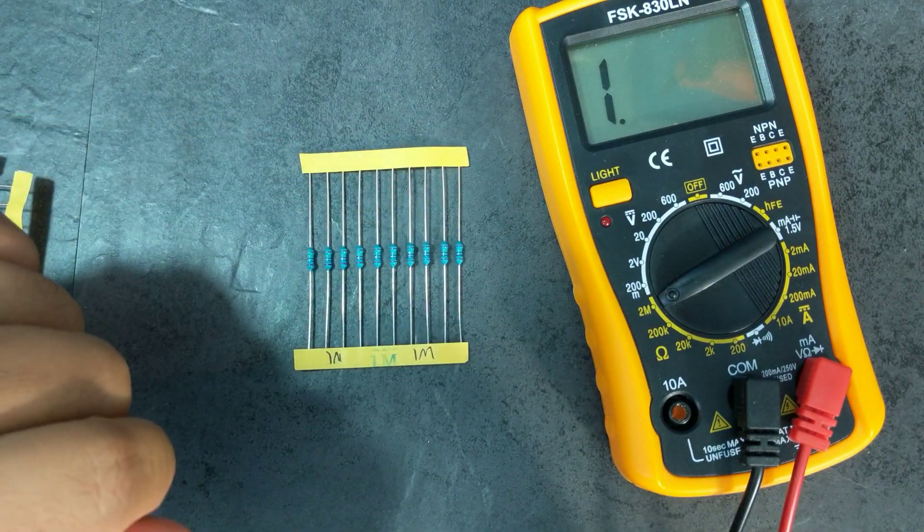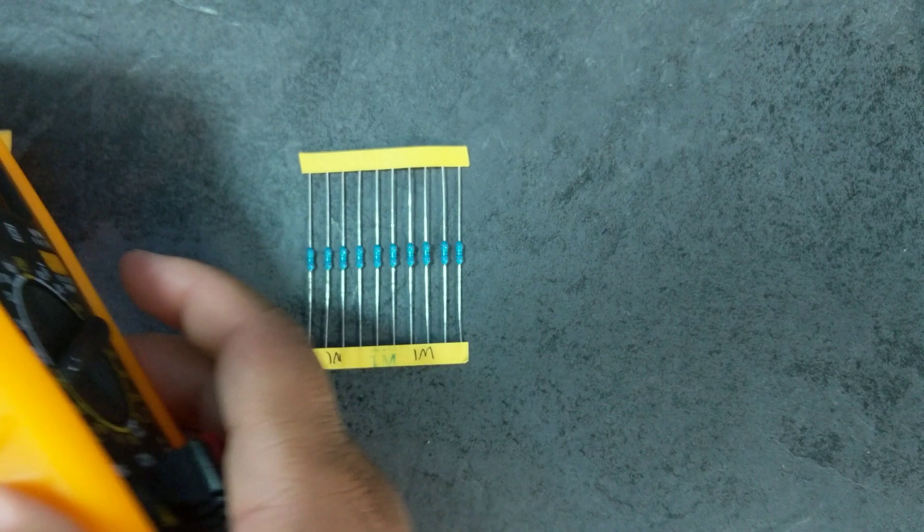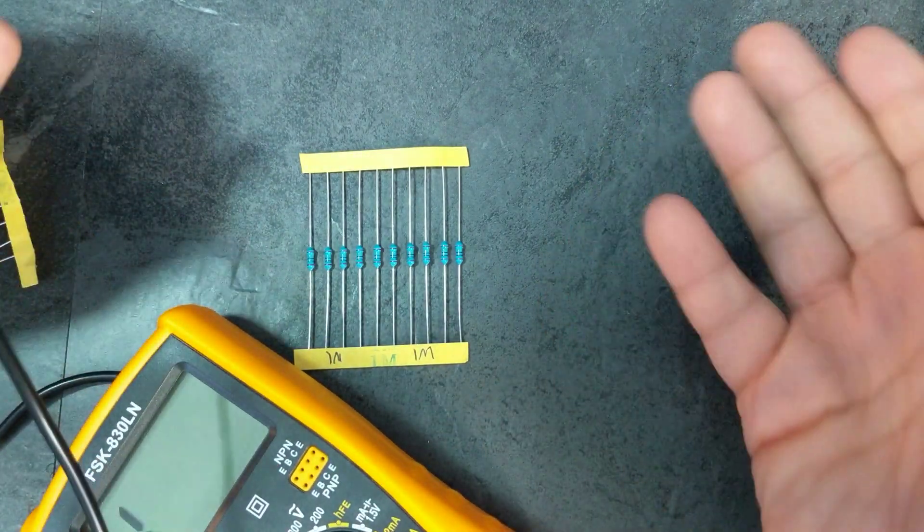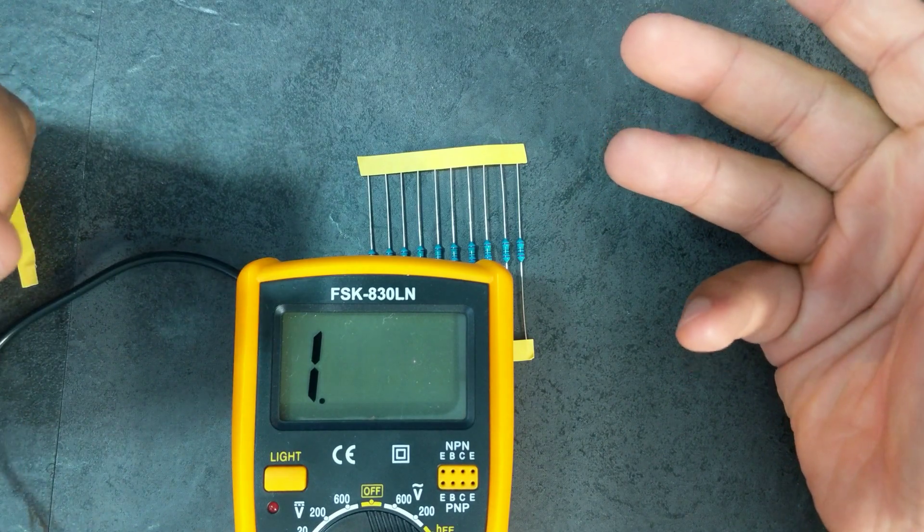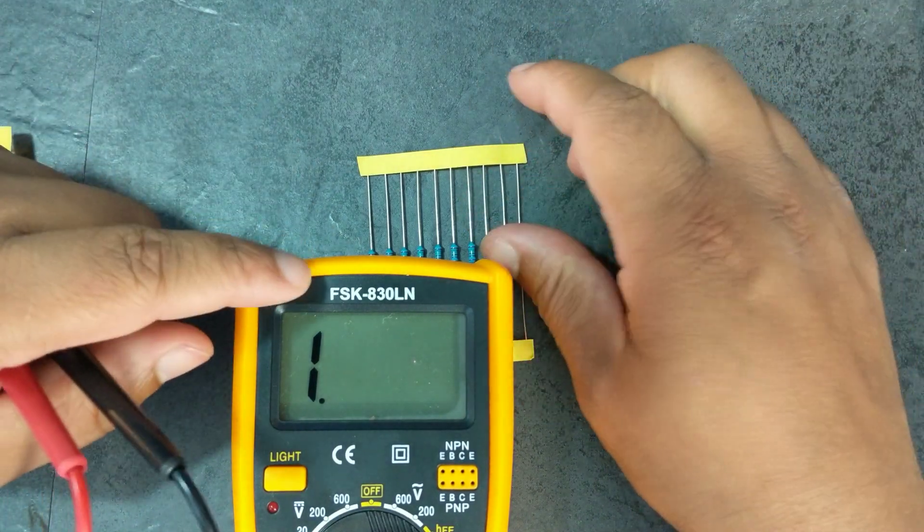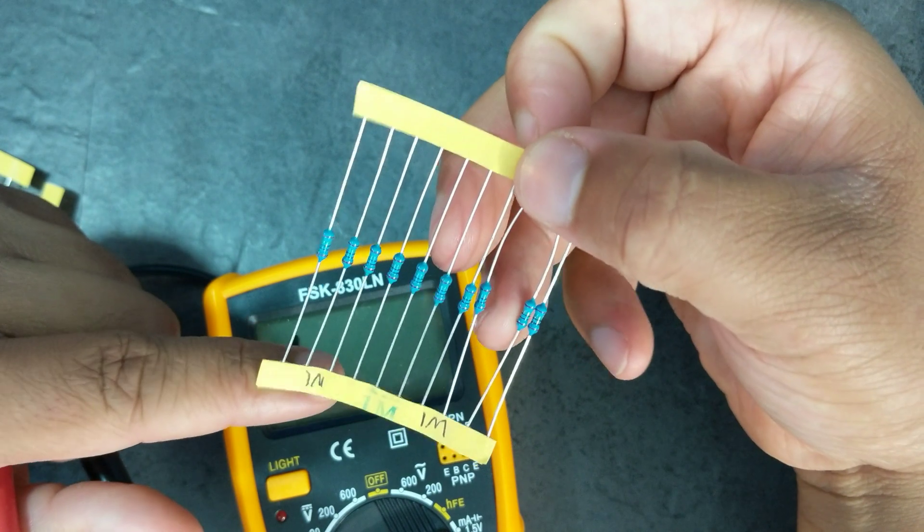I just keep my multimeter literally here on my desk, and usually whenever I'm doing anything on a breadboard I'm going to be using the multimeter at some point anyway. So I just use it to test resistors. It's rapid, it's quick, it's actually much quicker than putting color codes into the app.